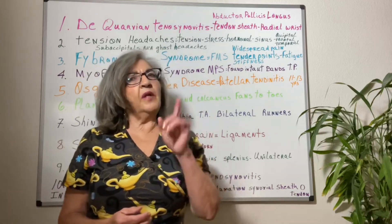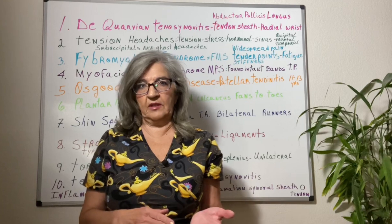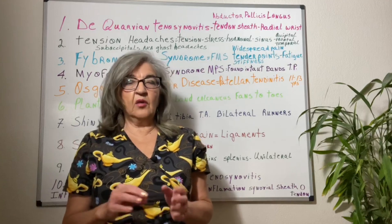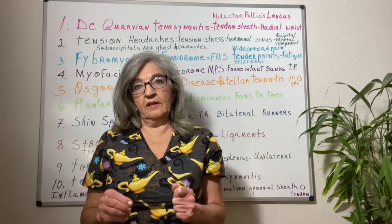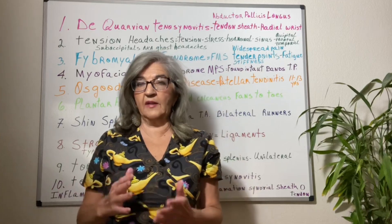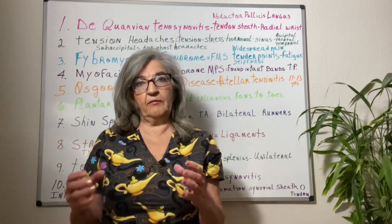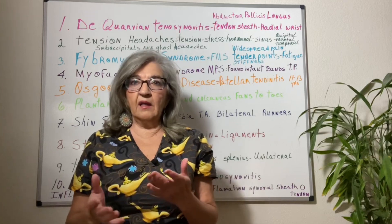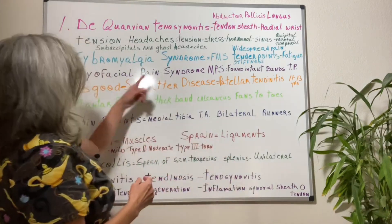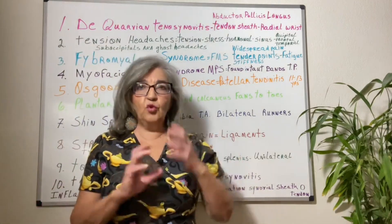I want to talk a little bit about the difference between syndrome and disease. A disease has a specific cause — for example, high glucose is a specific cause for diabetes, so you know the cause and effect. A syndrome is a group of symptoms and patterns that take the body out of homeostasis, like fibromyalgia syndrome or myofascial pain syndrome — it's a group of symptoms.